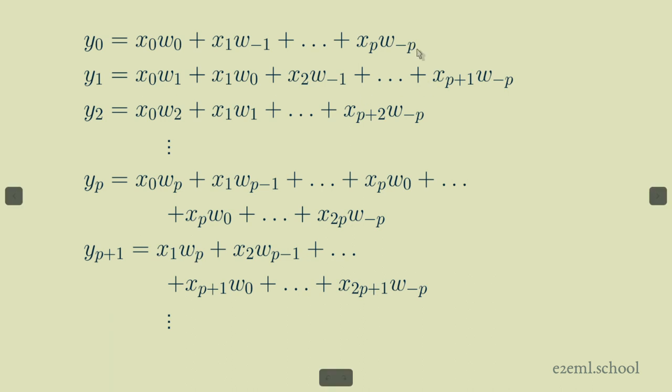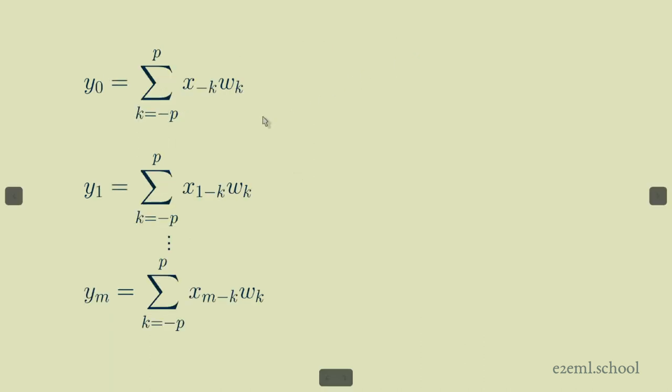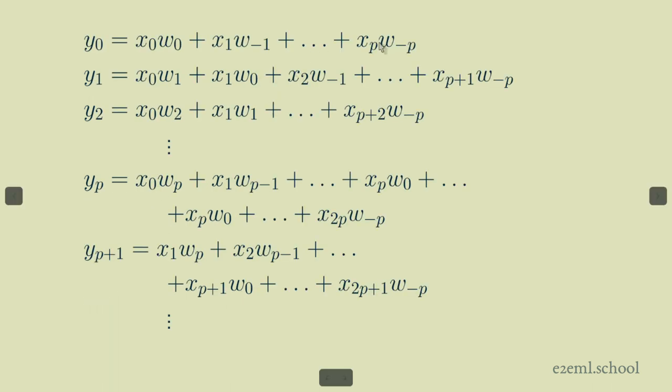So the very first element would be x sub minus minus p or x sub p times w sub minus p. So you can go through element by element in the equations we just wrote out longhand and see how these line up.